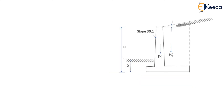Before that, let us discuss the general proportions for the different dimensions of the retaining wall. Here in this figure we can see a cantilever retaining wall of height H, retaining a soil backfill with surcharge angle i, meaning the surface of the backfill is inclined at angle i with the horizontal. The top width of the stem should be at least 0.3 meter to allow proper placement of concrete during construction. The width of the base slab is generally kept equal to two-thirds of the total height of the cantilever retaining wall.